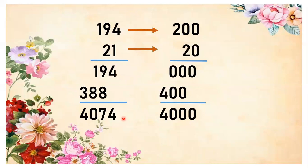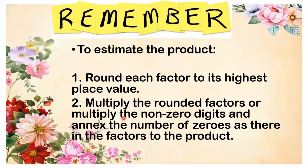Now remember, to estimate the product, round each factor to its highest place value, as we did a while ago. Number 2, multiply the rounded factors or multiply the non-zero digits and annex the number of zeros as they're in the factors to the product.